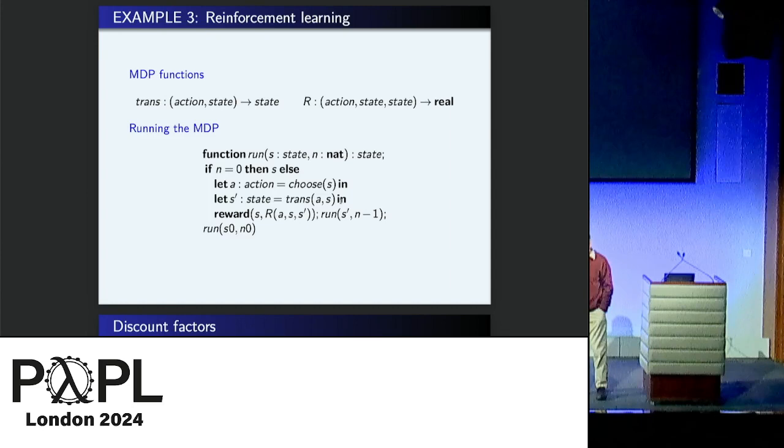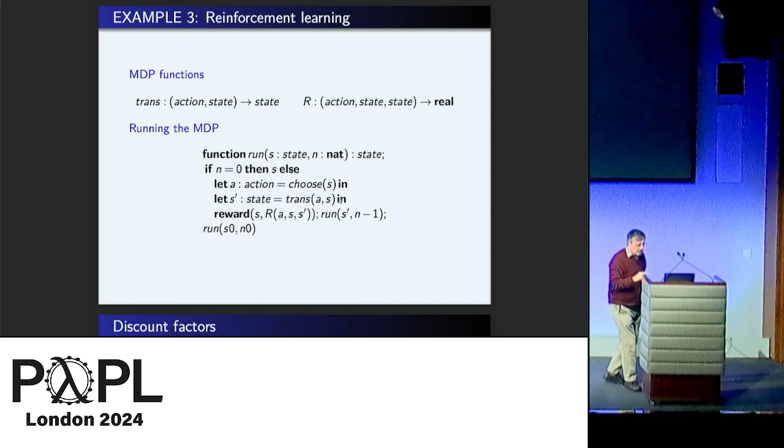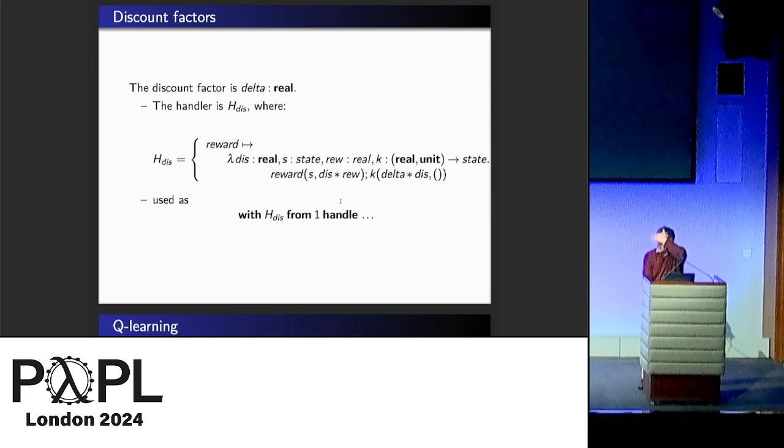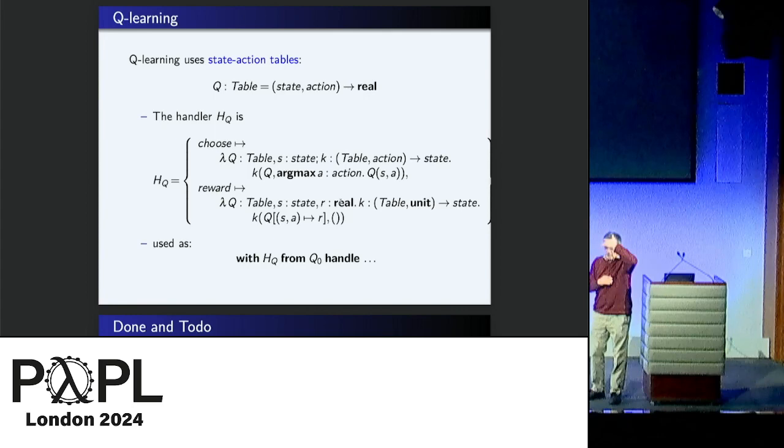The point here is choose. How do you actually do the choose? That's the whole thing, the whole story. So one actual point which I'm going to ignore is discounting, which you can do by handler, but that's a bit technical and not so immediately interesting. So let's do something called Q-learning.